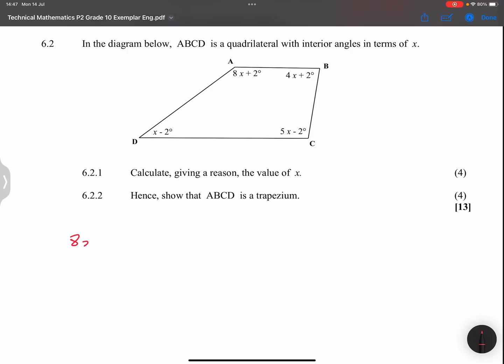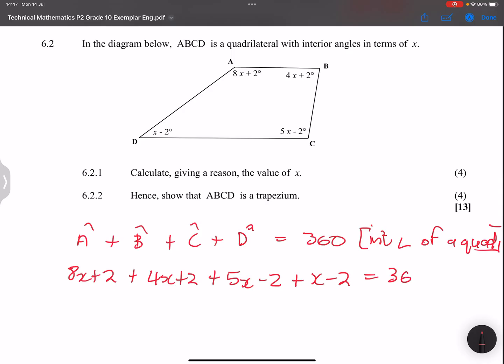So that means that 8x plus 2 degrees plus 4x. So this is going to give us angle A plus angle B plus angle C plus angle D is equal to 360. So those are the interior angles of a quad. So, we said 8x plus 2 plus 4x plus 2 plus we've got 5x minus 2, and finally, we've got plus x minus 2, and this equal to 360.